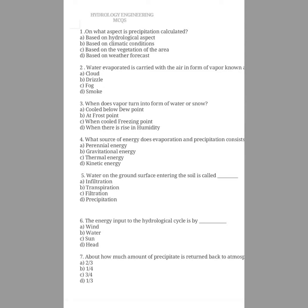The third question is: when does vapour turn into the form of water or snow? The options are: option A, cold below dew point; option B, at frost point; option C, when cold freezing point; option D, when there is rise in humidity. The answer is option A, cold below dew point. Water evaporates from the surface of the earth and is stored in the form of clouds. When the vapours in the atmosphere cool below dew point temperature, they fall in the form of water or snow, depending on the atmospheric temperature.